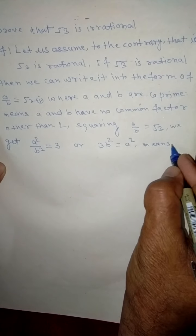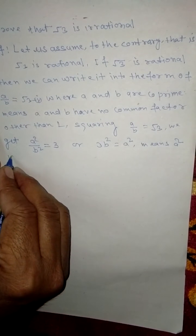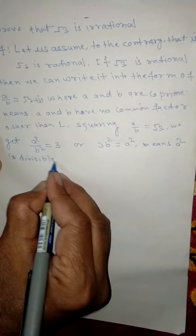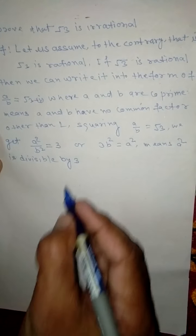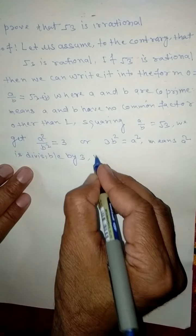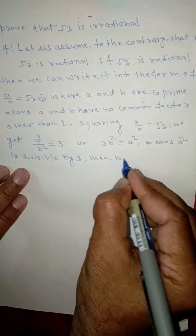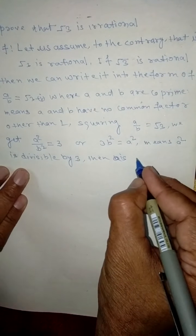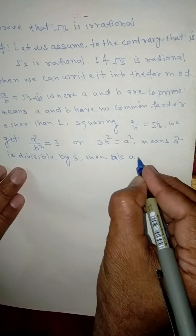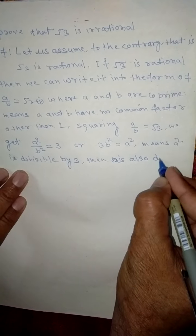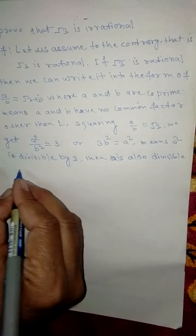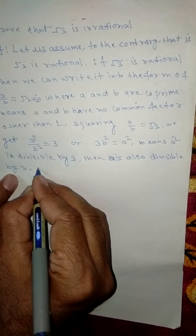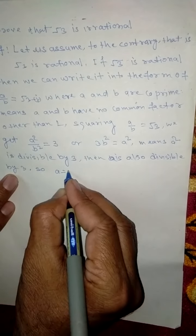This means A square is divisible by 3. Then A is also divisible by 3. Then A is equal to 3C.